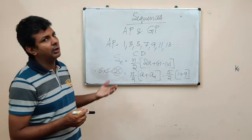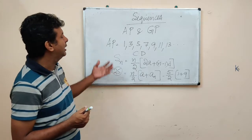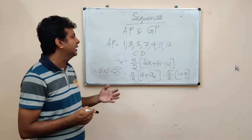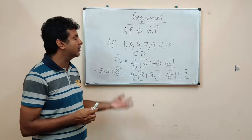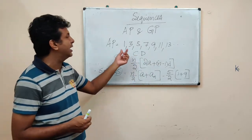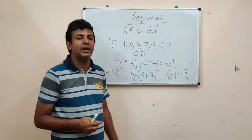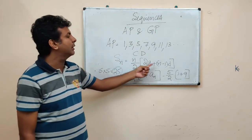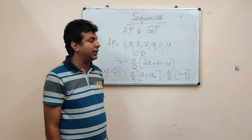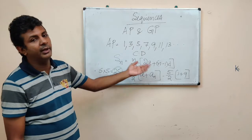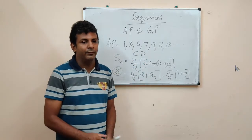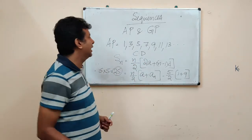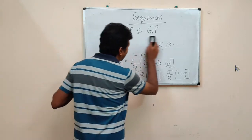So what are the characteristics of an AP? AP means arithmetic progression — it will have a common difference, meaning the difference between any two successive numbers will be the same. Sum to N terms is N/2 into (2A plus (N minus 1) into D) and the Nth term will be A plus (N minus 1) into D.